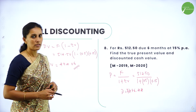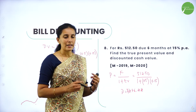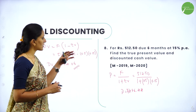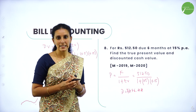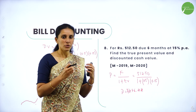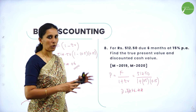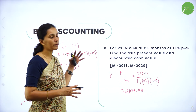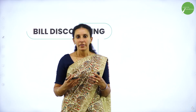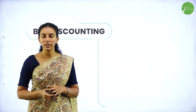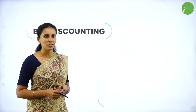So these are the formulas. In the chapter Bill Discounting, formulas are necessary to evaluate the problems. It is straightforward, and you can easily simplify problems once you know the relations between the terms. We have seen the types of questions solved in this chapter. In the next session, we'll meet you with a new chapter. Until then, keep watching, keep learning, keep exploring. Thank you.